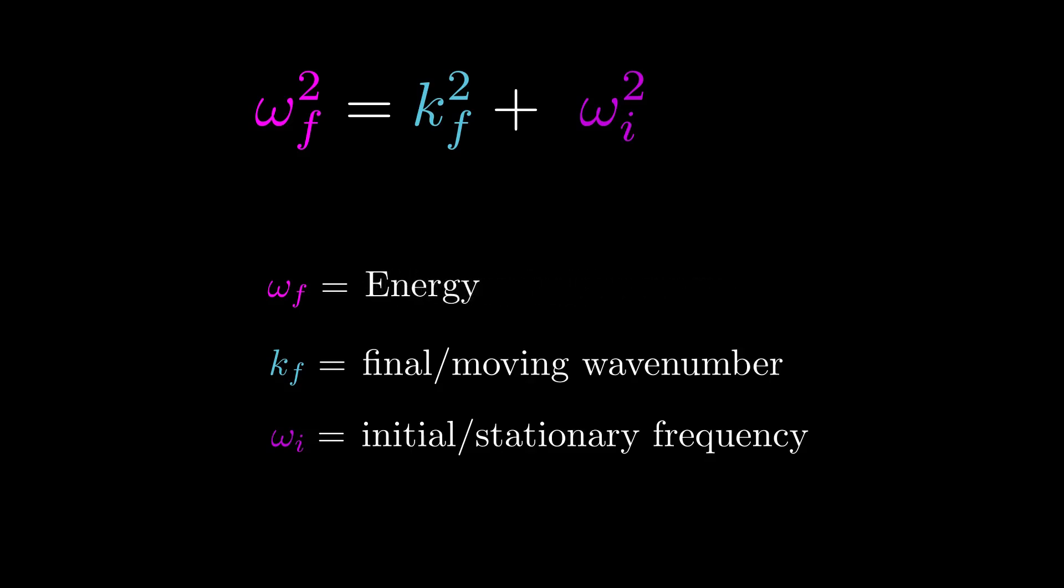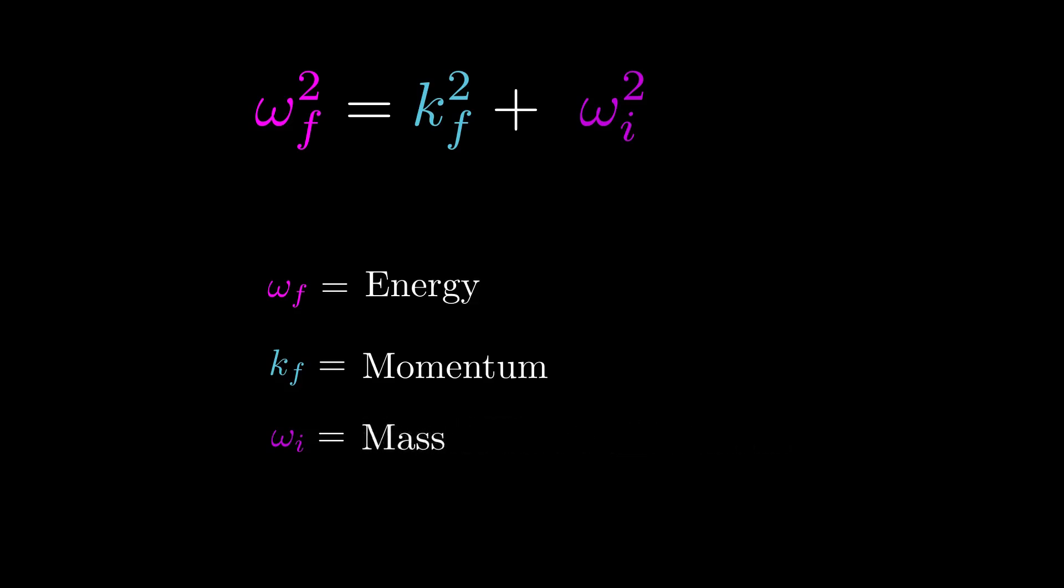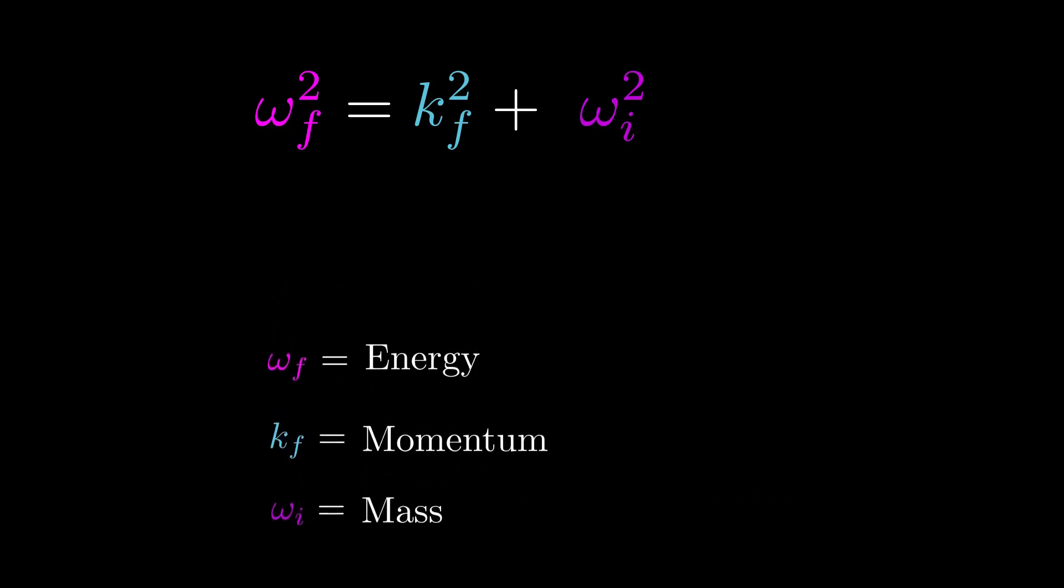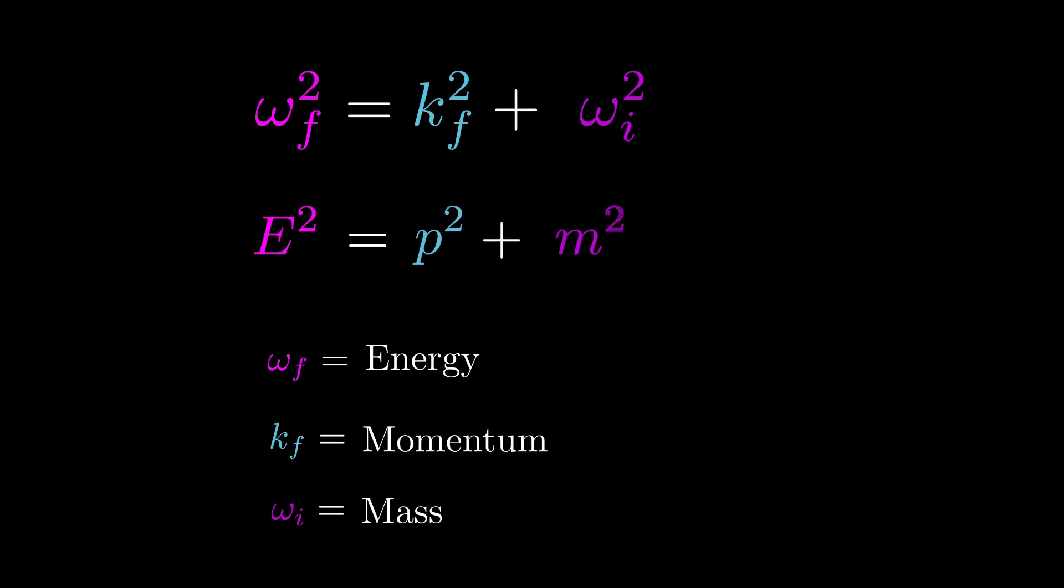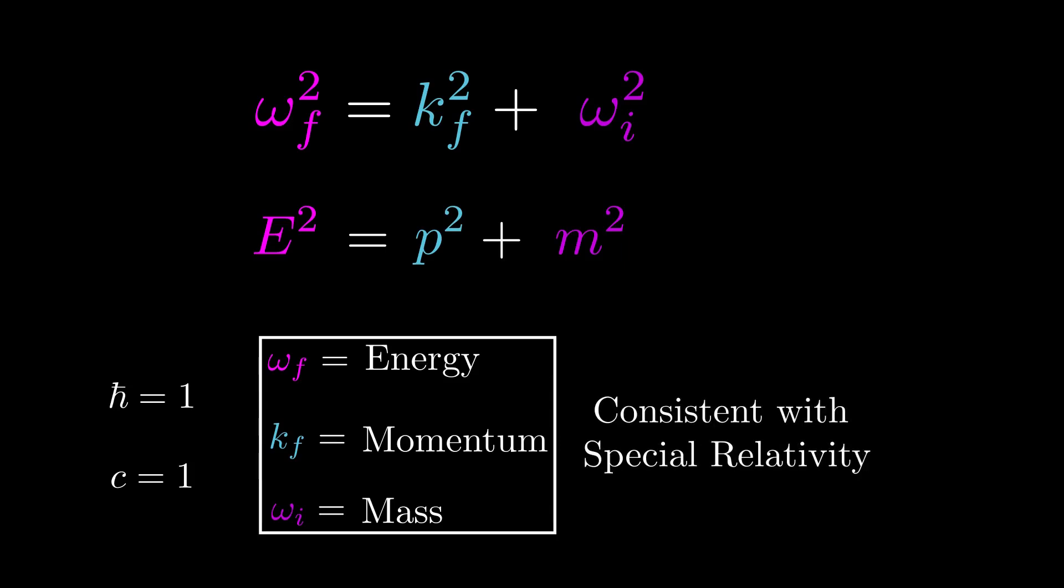Final frequency is the total energy. Final wavenumber is the momentum. And initial frequency is the energy of the stationary particle, which is just the mass. By the way, here we are working in units where the reduced Planck's constant and speed of light are set to one. We see that we recover the energy-momentum relation from special relativity.